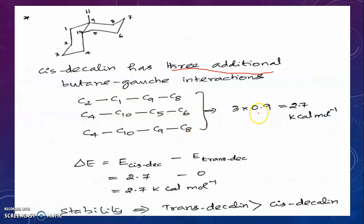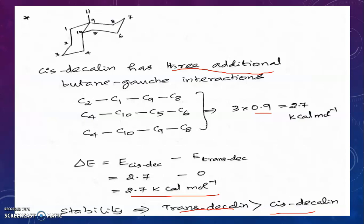There are three butane-gauche interactions, and the energy of each is roughly 0.9 kcal/mol. So 3 × 0.9 = 2.7 kcal/mol. For trans-decalin there is no additional butane-gauche interaction, so its potential energy is assumed to be zero. Compared to trans-decalin, cis-decalin has 2.7 kcal/mol greater energy, showing that trans-decalin is more stable than cis-decalin, with an energy difference of 2.7 kcal/mol.